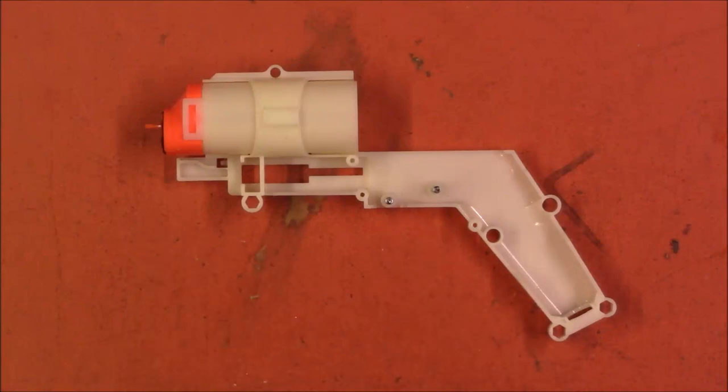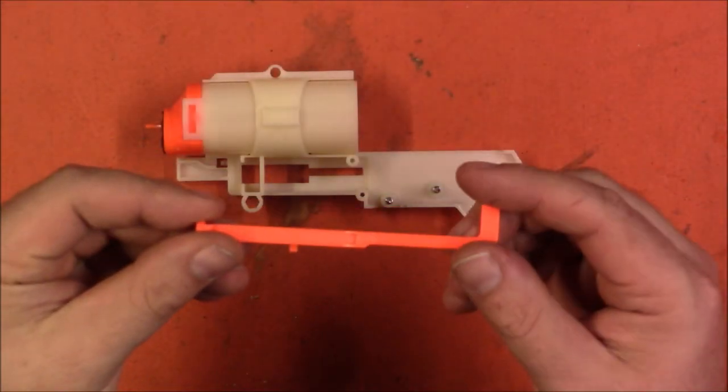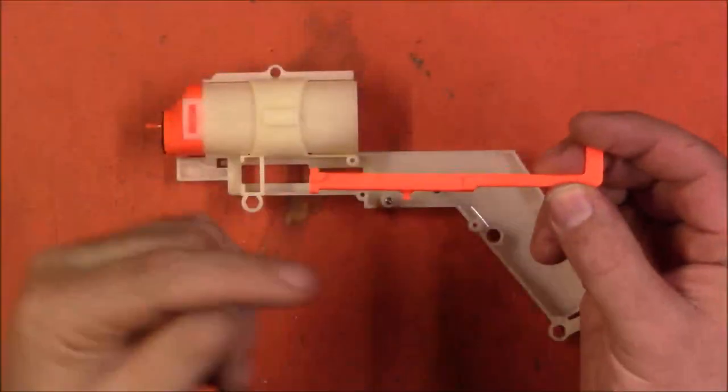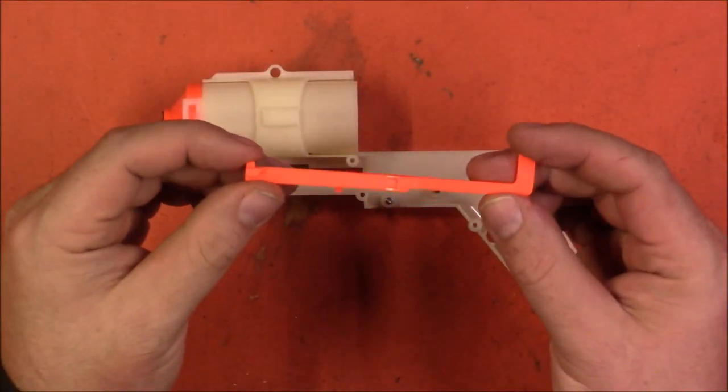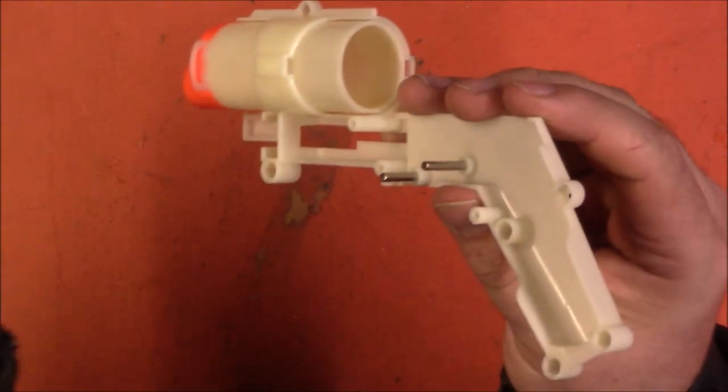Now that we have it stripped down to just the internal frame, we can start reassembling. Starting with the cylinder rotation arm. This is the part that gets pulled back as you prime the blaster and causes the cylinder to rotate. So it is quite vital. It is also kind of tricky to install.